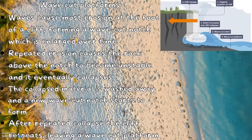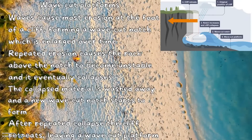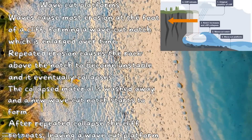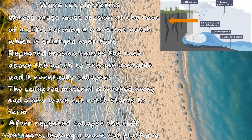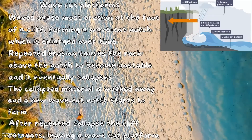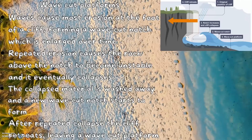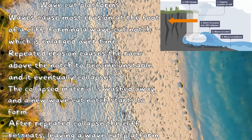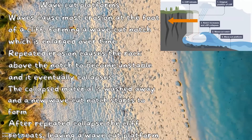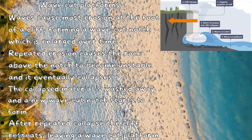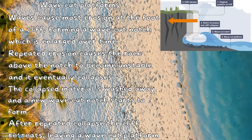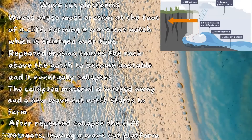Wave cut platforms. Waves cause most erosion at the foot of a cliff, forming a wave cut notch. This is enlarged over time.